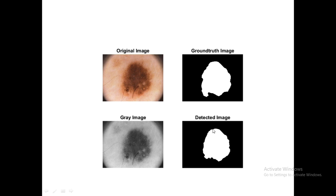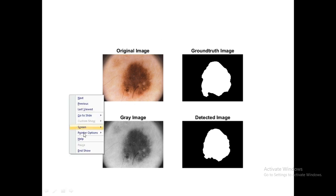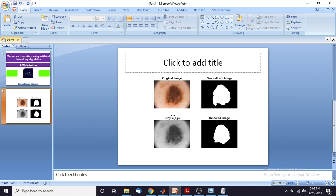That image is going to be compared with the ground truth image and then we have to analyze some parameters — normally the accuracy of the system and the accuracy of the artificial bee colony algorithm — so these are going to be analyzed in this video. Let's start with the MATLAB implementation of melanoma detection using the artificial bee colony algorithm.